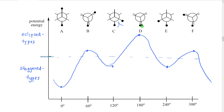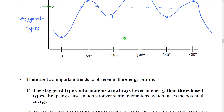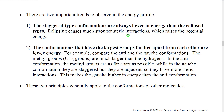Continuing on, we reach a fully eclipsed conformation, which has the highest steric interactions and therefore the highest potential energy. We then come back down to another gauche, go back up to another partially eclipsed, and continuing on we return to where we started. The potential energy profile of butane is more complex than that of ethane, but they share key features: staggered types are lower in energy than eclipsed types, and the more steric interactions present, the higher the overall potential energy. Conformations where the largest groups are far apart have lower energy than those where they are closer together.